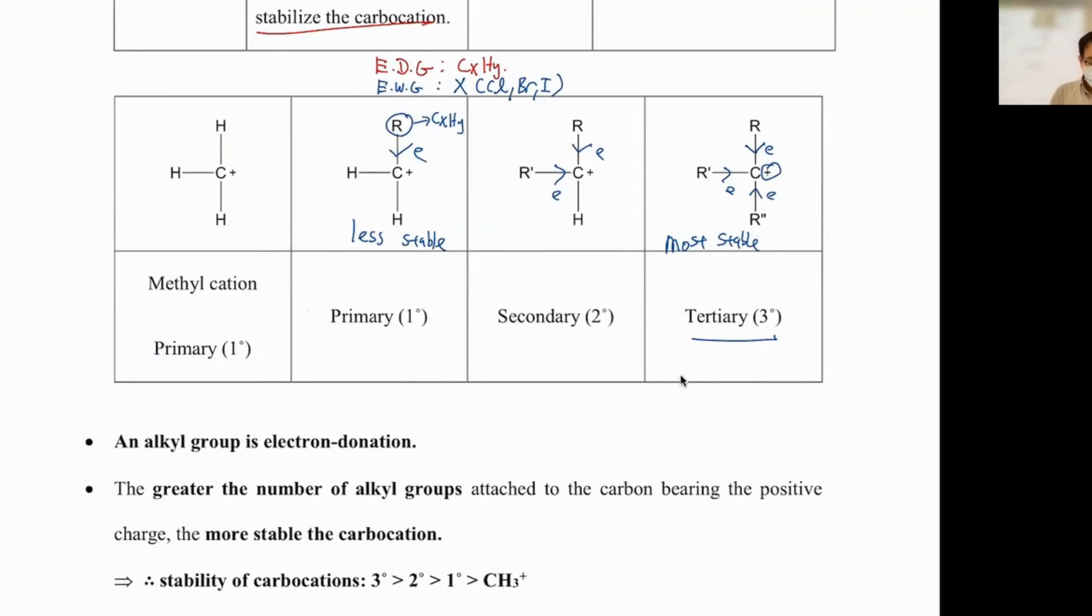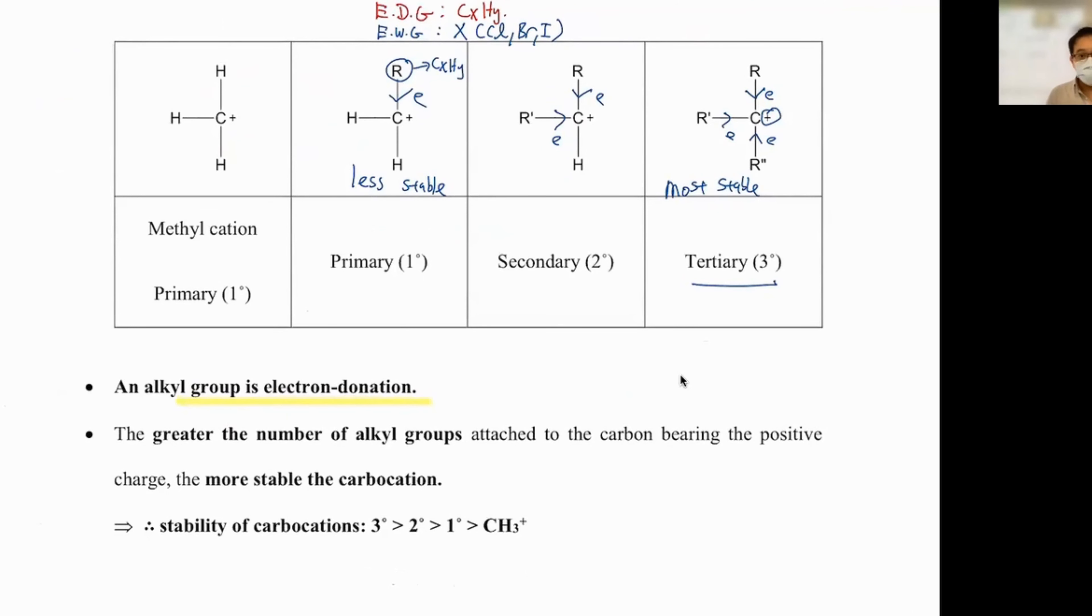Now here's the thing: alkyl is donating like I mentioned before. CxHy is normally the alkyl group. The greater the number of alkyl groups, the more stable the carbocation. That is the reason why we say tertiary is the most stable, followed by secondary, then primary, followed by methyl carbocation. There's no positive charge. There's no R group at all. So this is what we call the inductive effect. This is the fundamental of your entire organic chemistry.